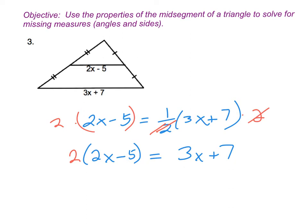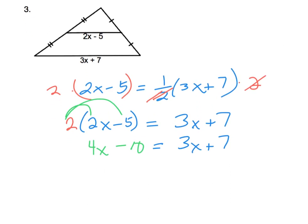From there I have to distribute, because I've got 2 times the quantity 2x minus 5. So I'm getting 4x minus 10 is equal to 3x plus 7. Subtracting 3x and adding 10, I get x equals 17.